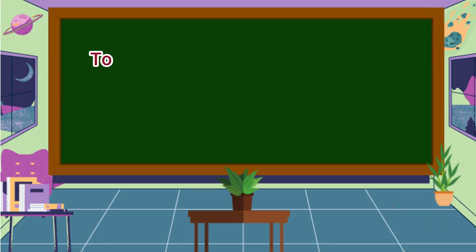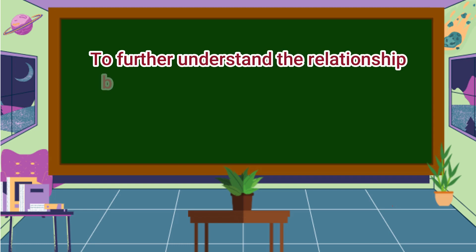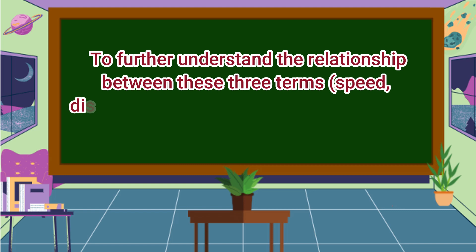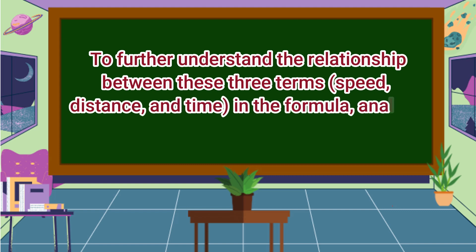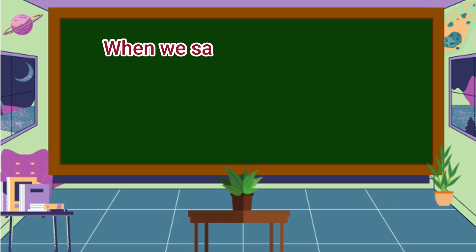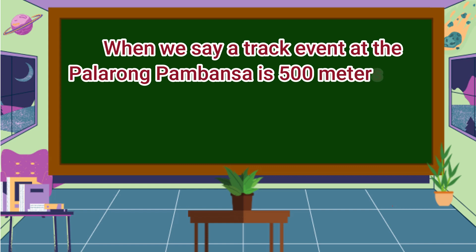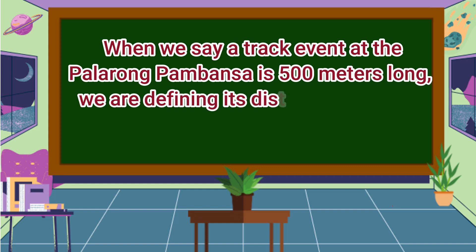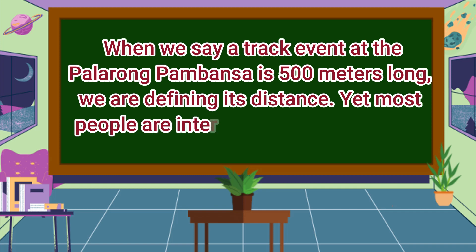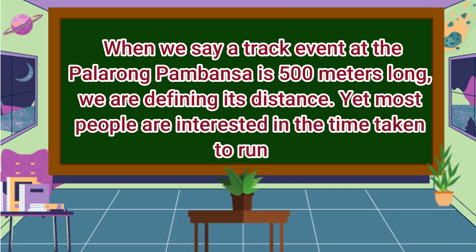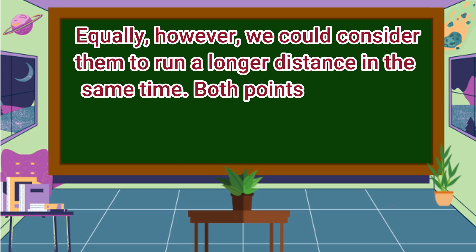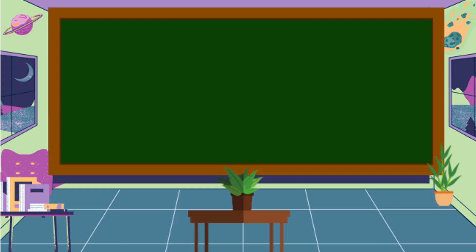To further understand the relationship between speed, distance, and time, analyze the situation below. When we say a track event at the Palarong Pambansa is 500 meters long, we are defining its distance. Yet most people are interested in the time taken to run it. Equally, however, we could consider them to run a longer distance in the same time. Both points of view are exactly the same — all that we're talking about is their average speed.